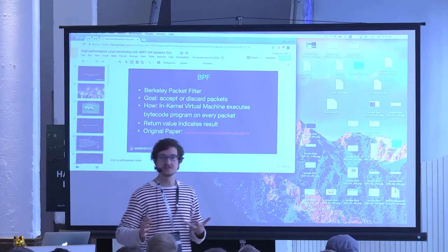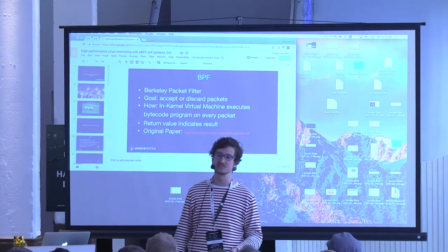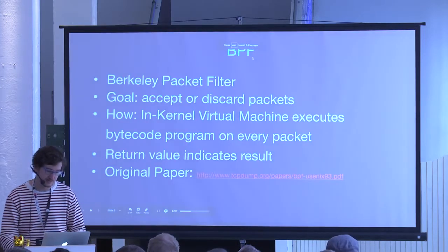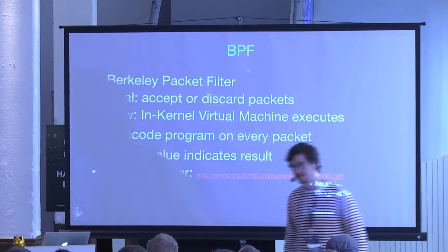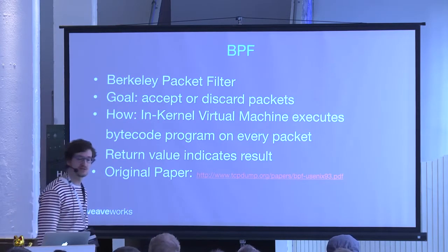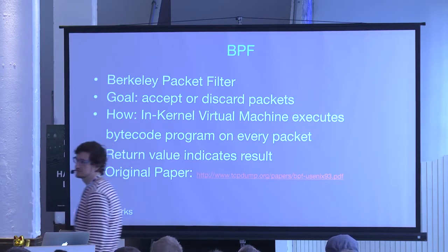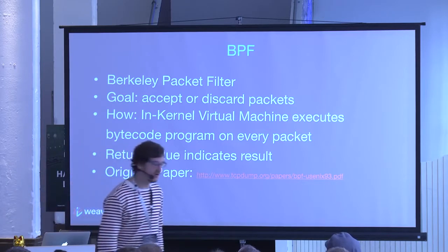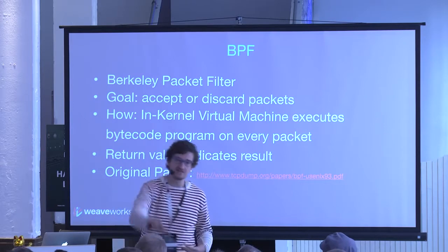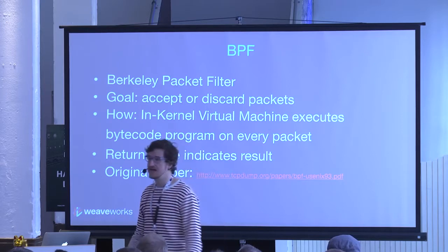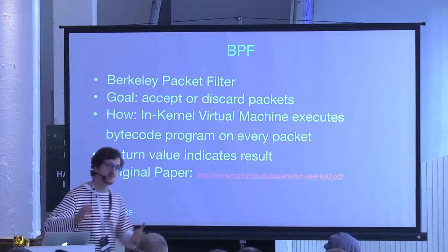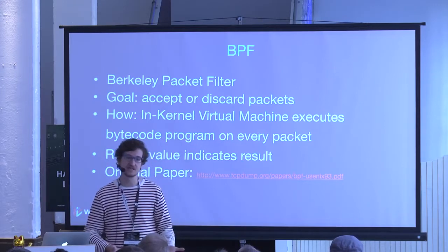Without kernel-side filtering it would be super inefficient, because you'd need to forward every single TCP packet to user space and filter it there. In 1992, the Berkeley Software Distribution Unix (BSD) introduced something called the Berkeley Packet Filter, described in a really interesting paper I encourage you to read. Its goal is to filter packets in the kernel based on a virtual machine — a bytecode program executed by that VM — which runs on every packet for a given networking interface and decides whether the packet is filtered or not.